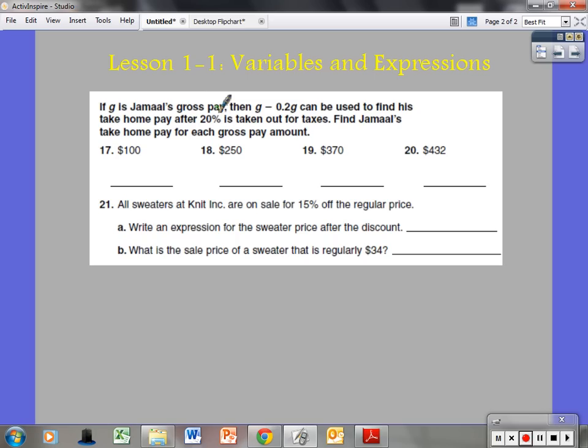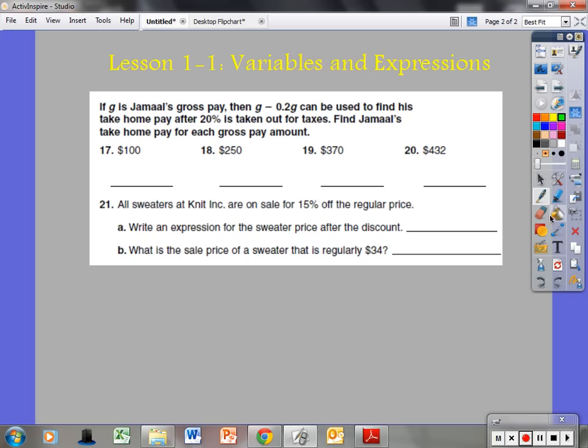If G is Jamal's gross pay, then G minus 0.2 times G can be used to find his take home pay after 20% is taken out for taxes. Find Jamal's take home pay for each gross pay amount. Now I'm just going to skip 17 and 18, I'll do 19 for here. Now they give us the expression to use. It's going to be G minus 2 tenths, which is the same as 20% times G. And they're giving us what G is. G is equal to $370. So I will take $370 and substitute it into the expression.